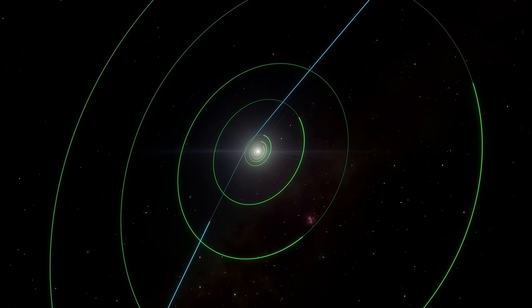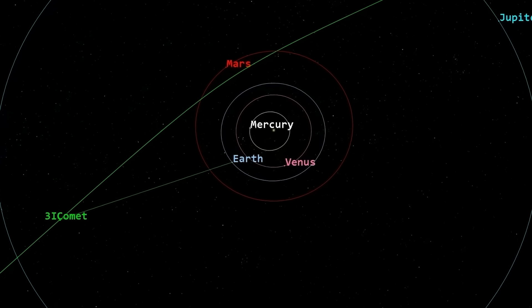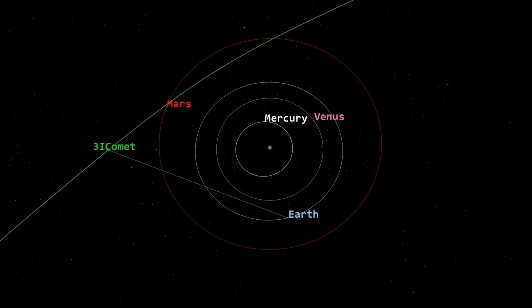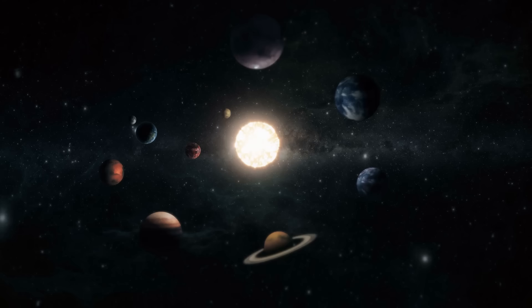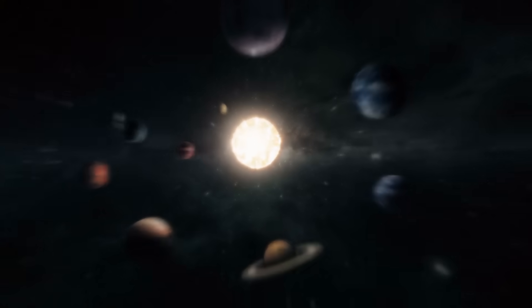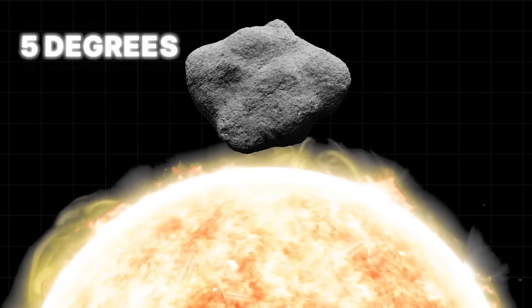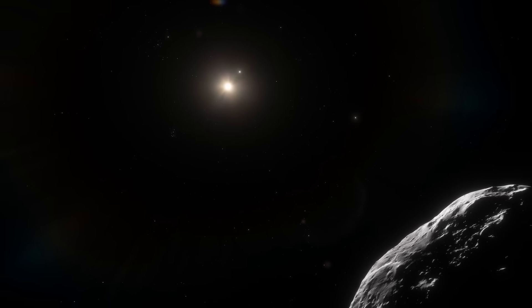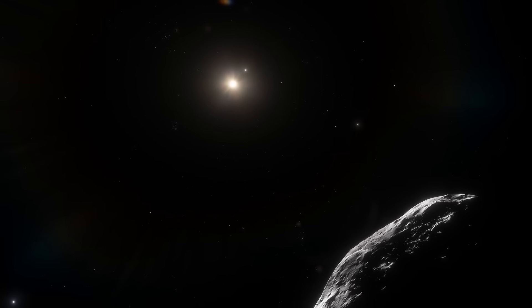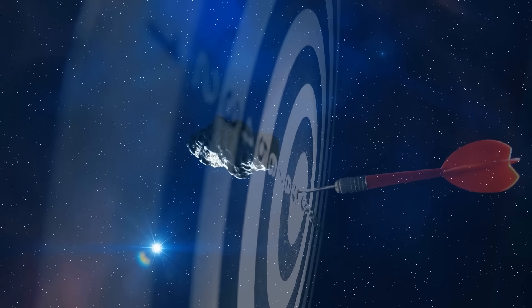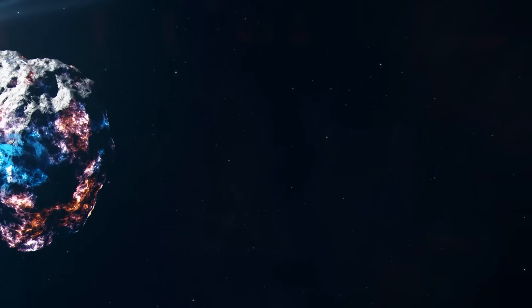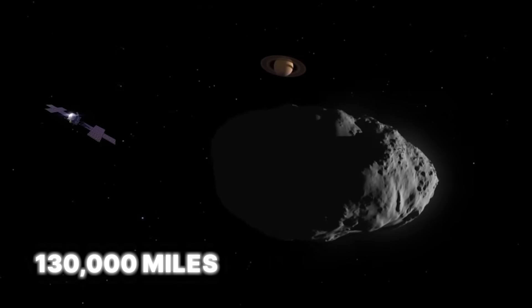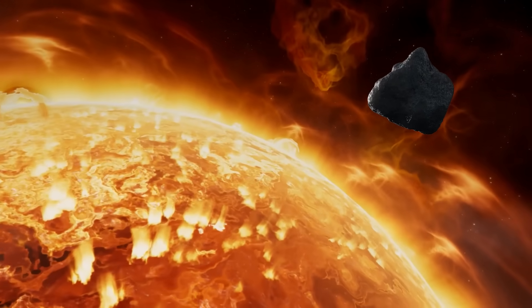But the weirdness doesn't stop there. You see, the object's path is another piece of the puzzle. It's flying into our solar system on a trajectory that is almost perfectly aligned with the ecliptic plane, the flat disk where all the planets orbit the sun. It's only off by 5 degrees. A level of precision that is statistically mind-boggling for a random object from interstellar space. It's like throwing a dart from miles away and hitting just outside the bullseye. It's traveling at an incredible speed, currently clocking in at over 130,000 miles per hour. During its closest approach to the sun, it will accelerate to a blistering 152,000 miles per hour.